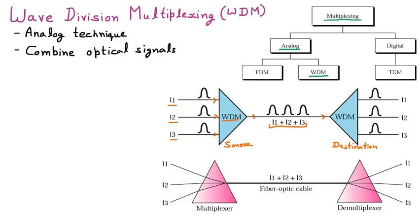At the destination, a demultiplexer is there, which divides the combined signal back into separate lights — L1, L2, and L3. So the mux combines many to one, and the demux divides back to three different lights. This is how wave division multiplexing works.